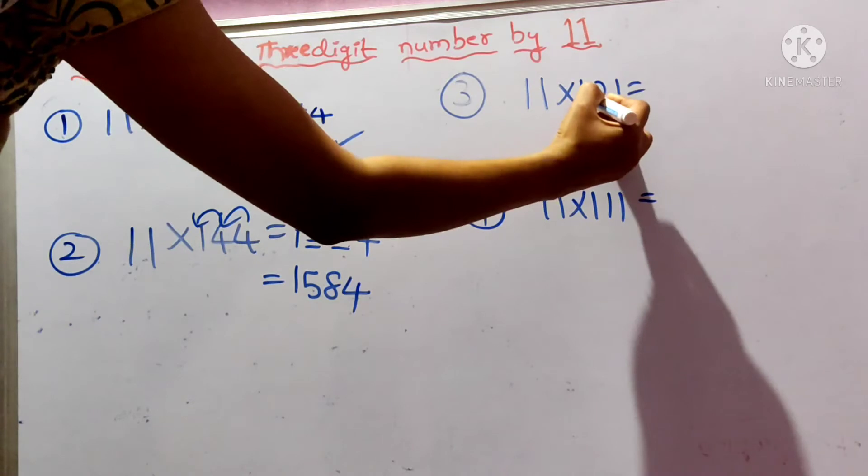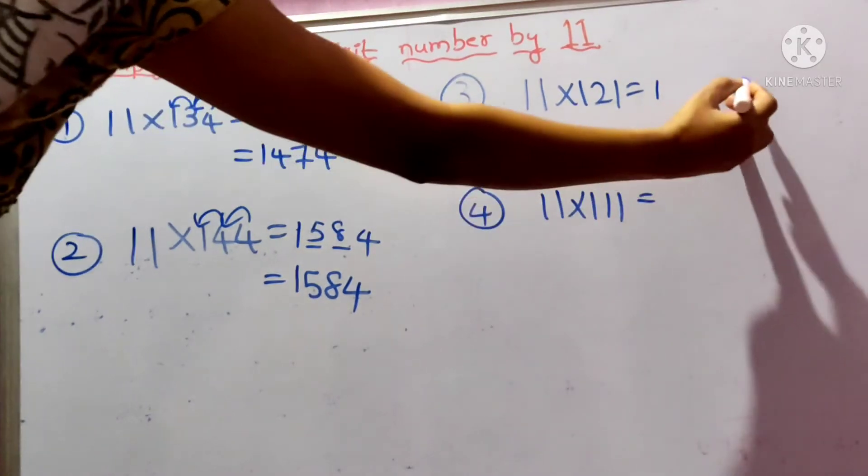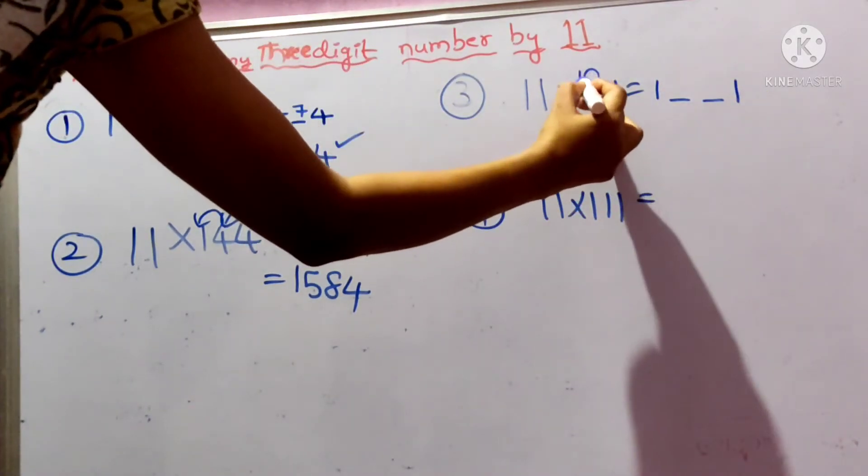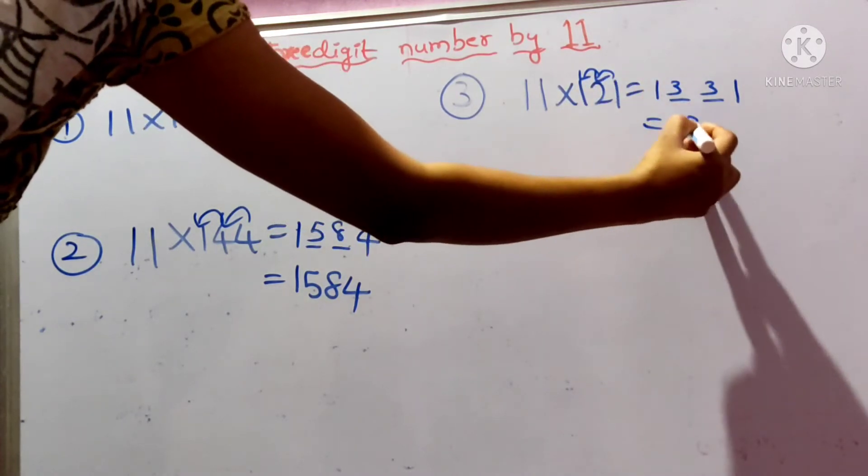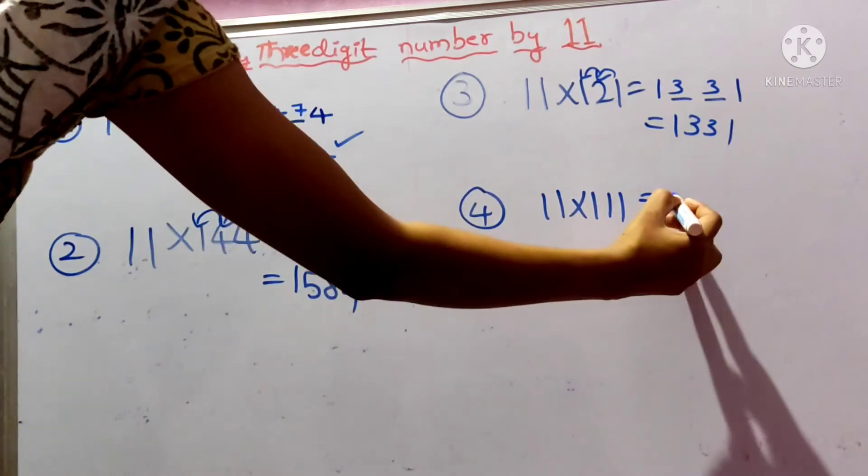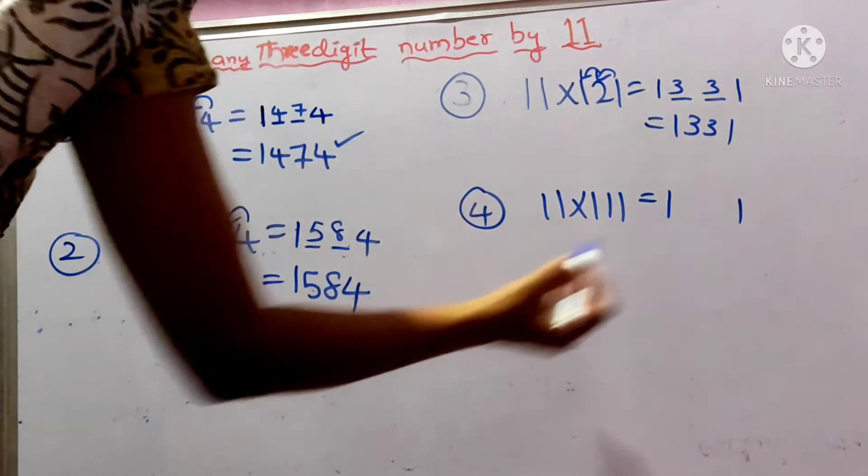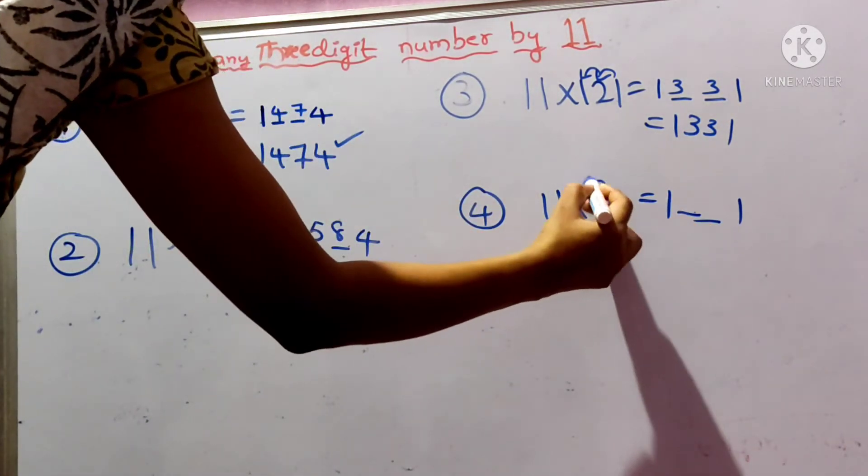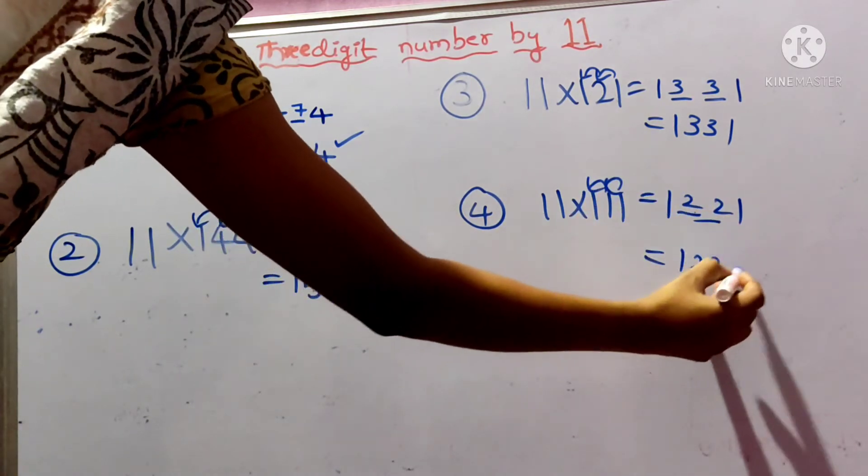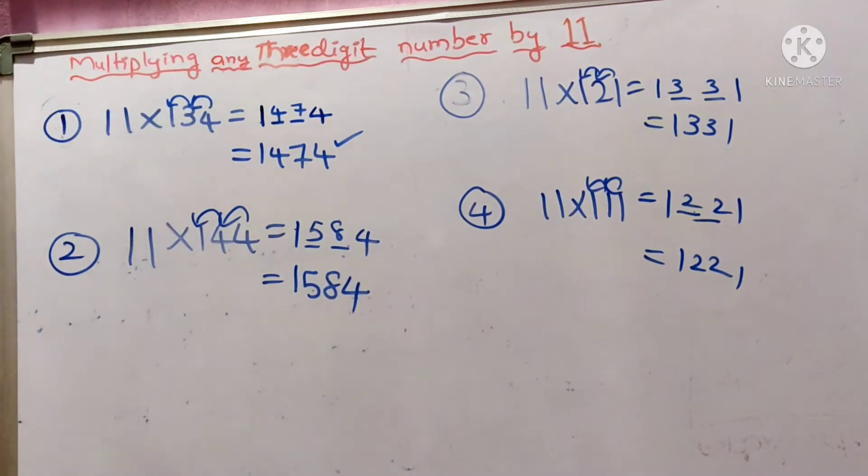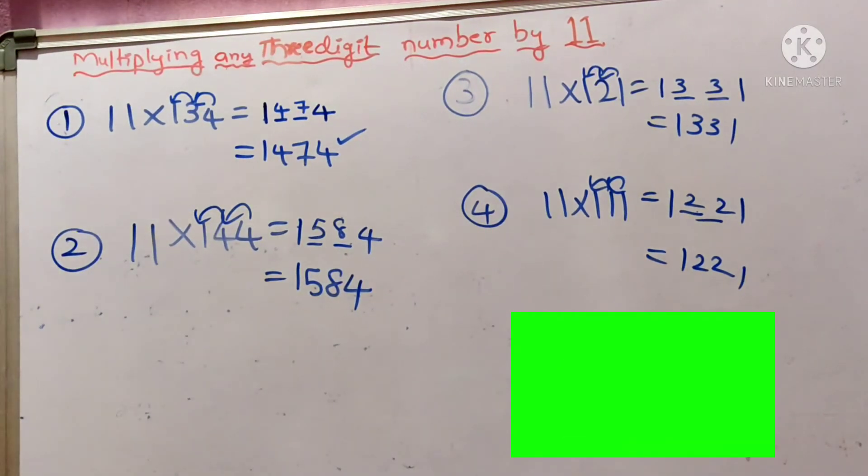11×121: first digit is 1, last digit is 1, give two spaces. 2+1 is 3, 1+2 is 3. Answer is 1331. Similarly, 11×111: first digit is 1, last digit is 1. 1+1 is 2, 1+1 is 2. Answer is 1221. You can check all these values with your calculator.